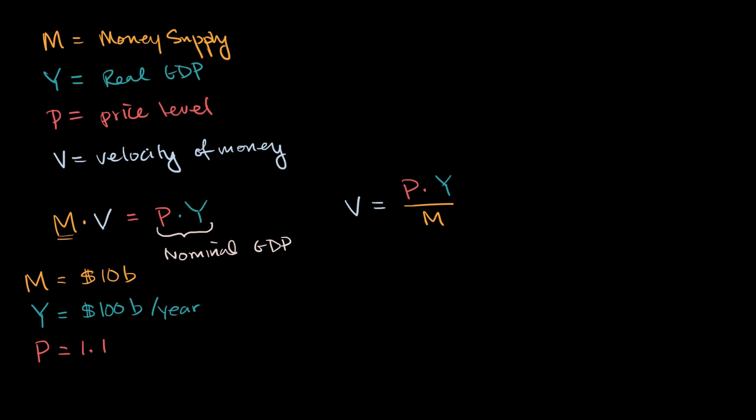And so this is going to be equal to, we have 1.1 times 100 billion dollars per year, divided by 10 billion dollars. So what is this going to be? 1.1 times 100 is 110, divided by 10 is 11. So we are going to get, this is going to be equal to 11. The dollar units would actually cancel out. And all you're left with, if you try to look at the units, is 11 times per year. And so one way of interpreting this is for these numbers, your average dollar is going to circulate 11 times per year.